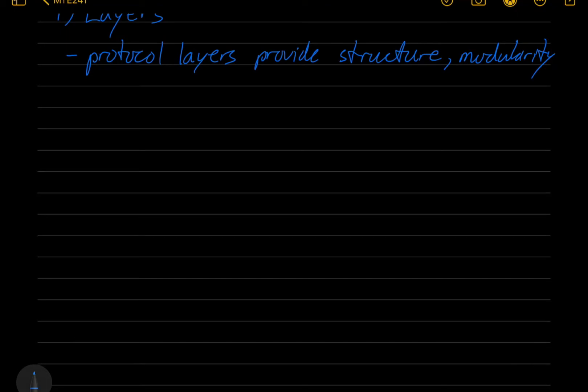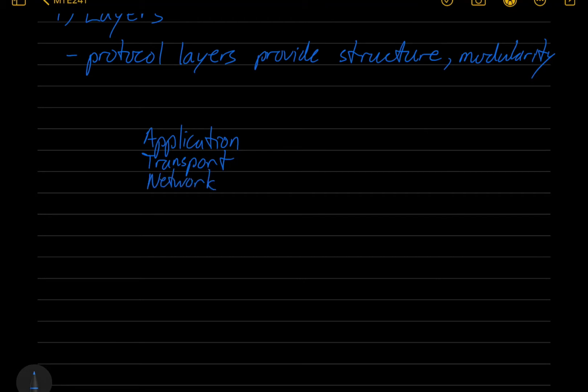I'm going to show you two network protocol stacks. The first one is a five layer protocol and it's the internet protocol stack. It's got the application layer, the transport layer, the network layer, the link layer, and the physical layer.